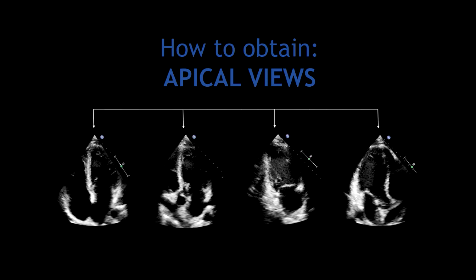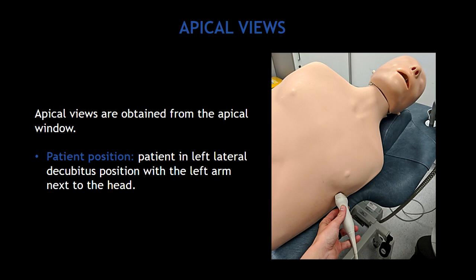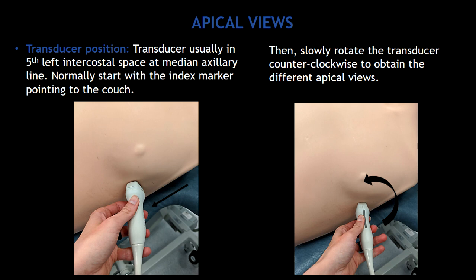Hello guys, in this video I'm going to show you how to obtain the apical views. The apical views are obtained from the apical window. The patient has to be in the left lateral decubitus position with the left arm next to the head. To obtain any apical views, first you have to place the transducer in the fifth left intercostal space at the median axillary line.